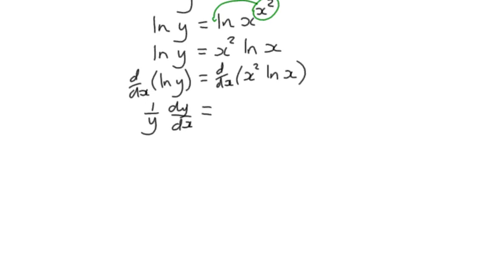On the right-hand side, we have two terms in x — we've got x squared and we've got the log of x. In the previous example, we had the log of 2, a number, which is a constant. But this isn't a constant, so we have two terms in x, and we must use the product rule for that.